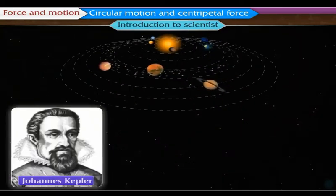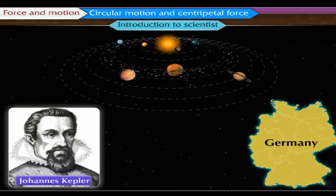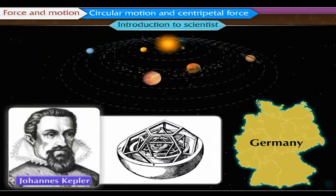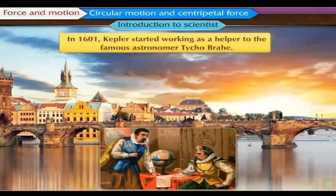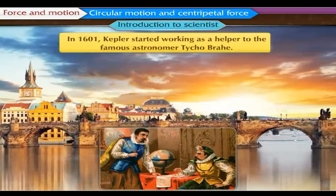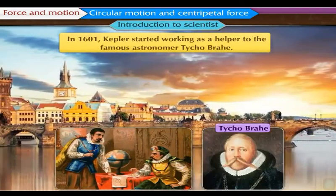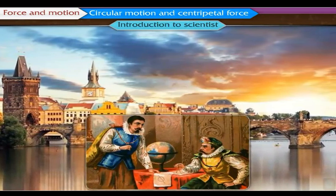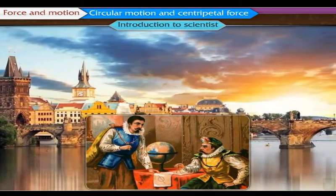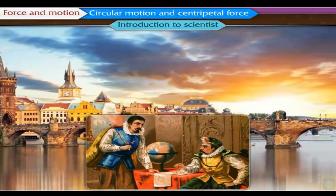Introduction to Scientist: Johannes Kepler was a German astronomer and mathematician. In 1601, Kepler started working as a helper to the famous astronomer Tycho Brahe. After the sudden death of Brahe in 1601, Kepler was appointed as the royal mathematician in his place.